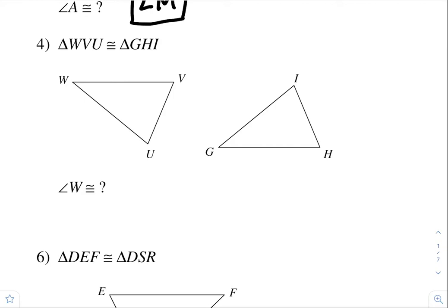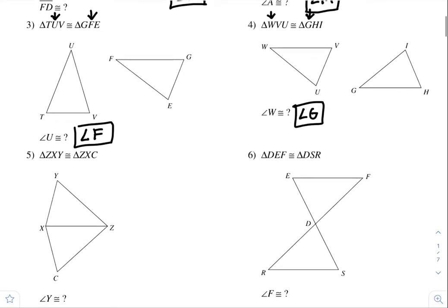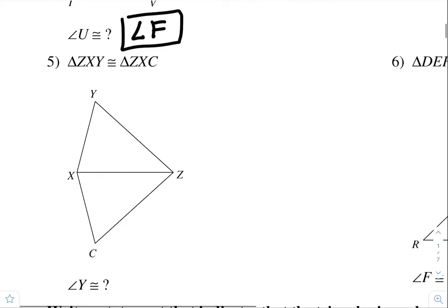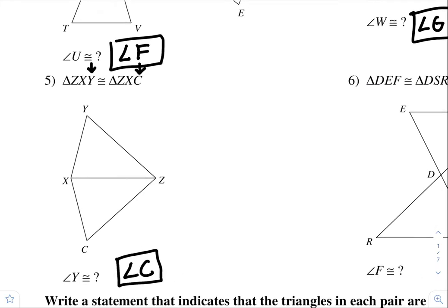Number four. Angle W is congruent to which angle? Use your congruent statement. Since these triangles are congruent, angle W must also be congruent to angle G. Now, triangle ZXY is congruent to triangle ZXC, so angle Y is congruent to what? In the congruency statement, angle Y corresponds to angle C. Its corresponding angle to the other triangle is angle C, and since the triangles are congruent, they are congruent.